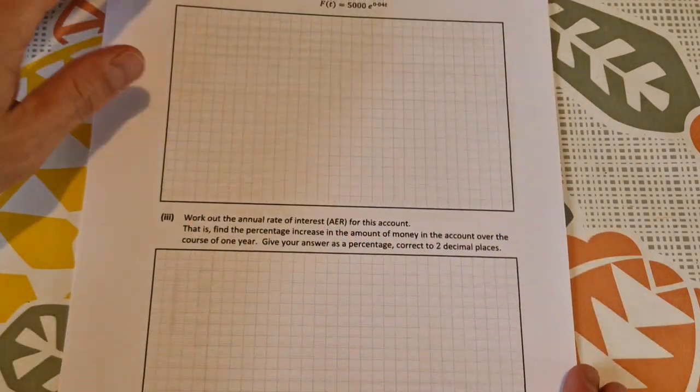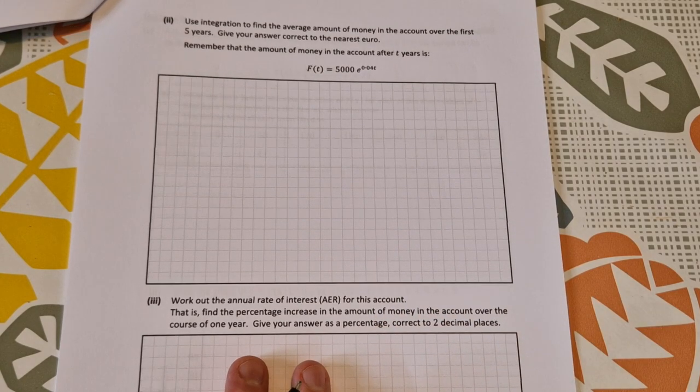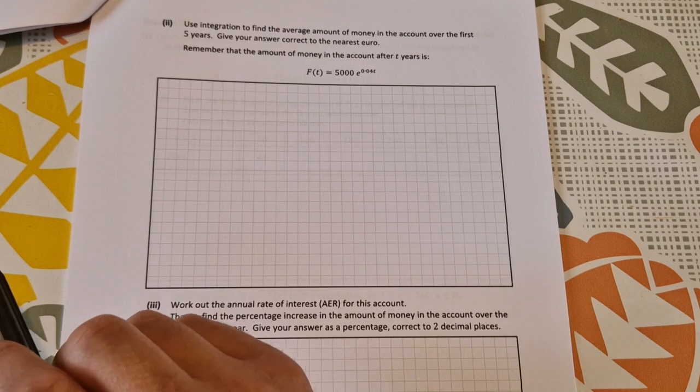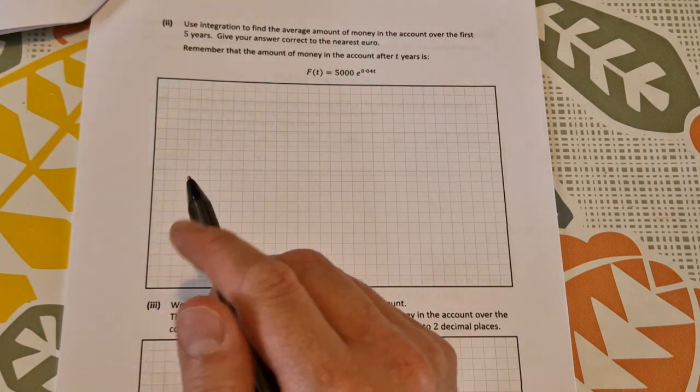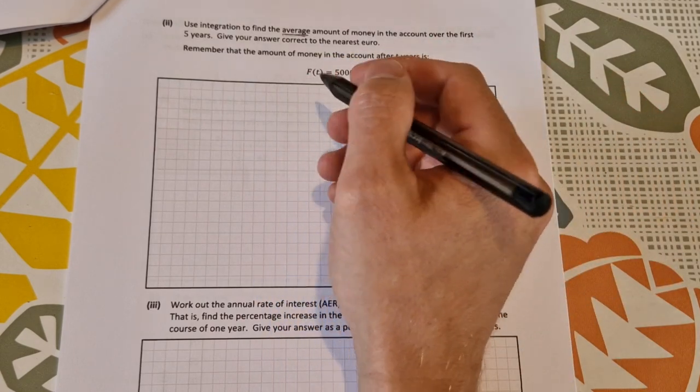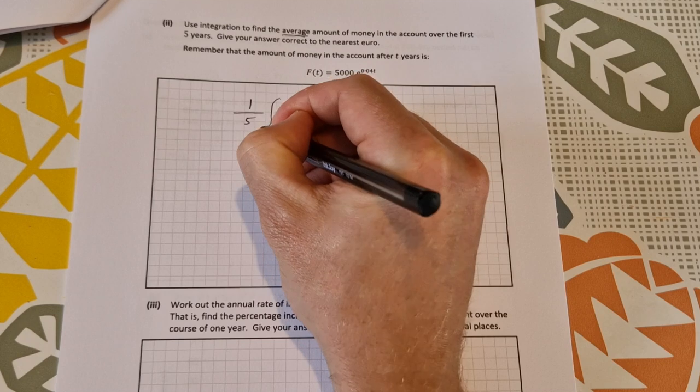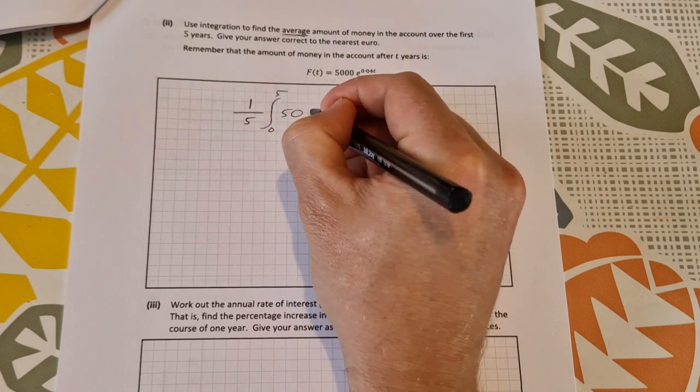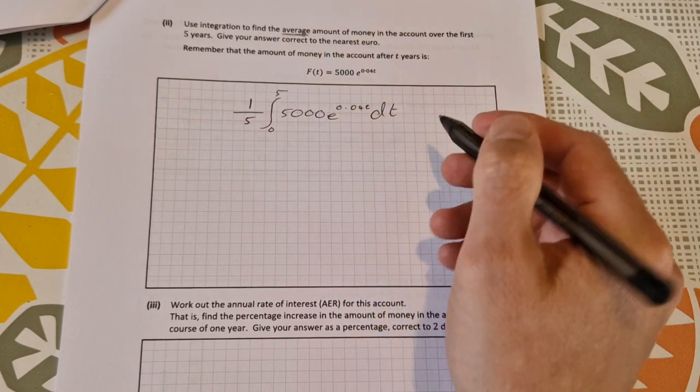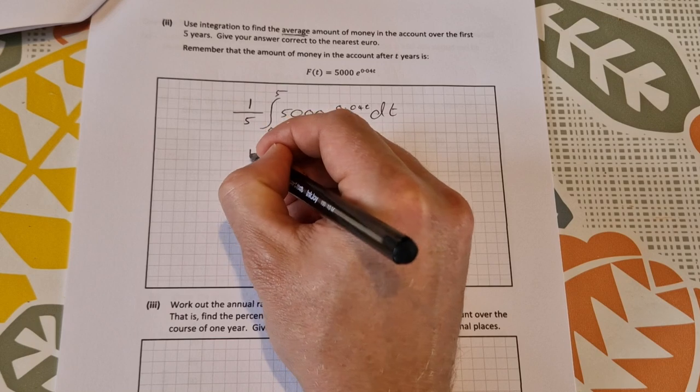Let's click over then to the next part of C. Use integration to find the average amount of money in the account over the first five years. Give your answer correct to nearest euro. They're just giving you the function again. So use integration to find the average amount - that's the average value formula. So it's for five years, that's integrating between zero and five. So one over b minus a is one over five times the integral from zero to five of 5,000 e to the 0.04 t dt. Now you can take the 5,000 outside of the integral and multiply it by the one fifth to get 1,000.